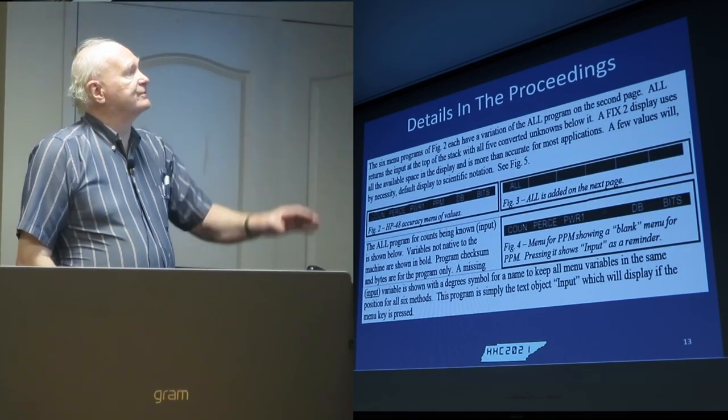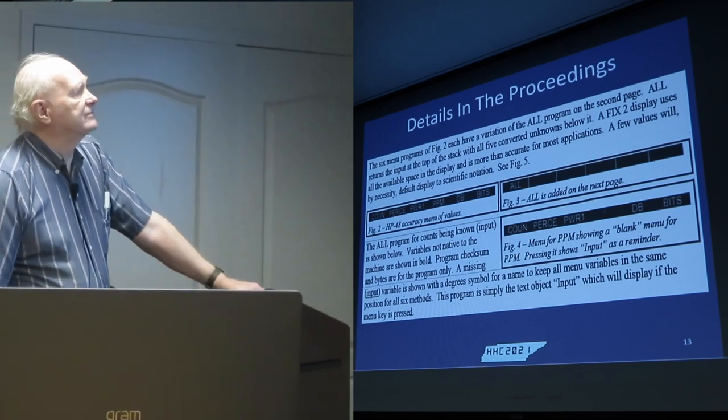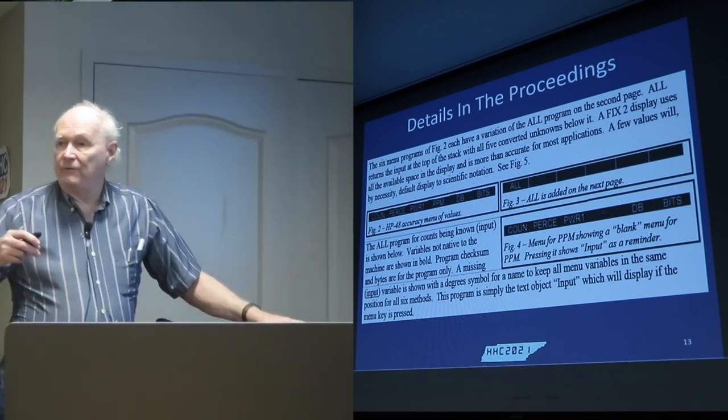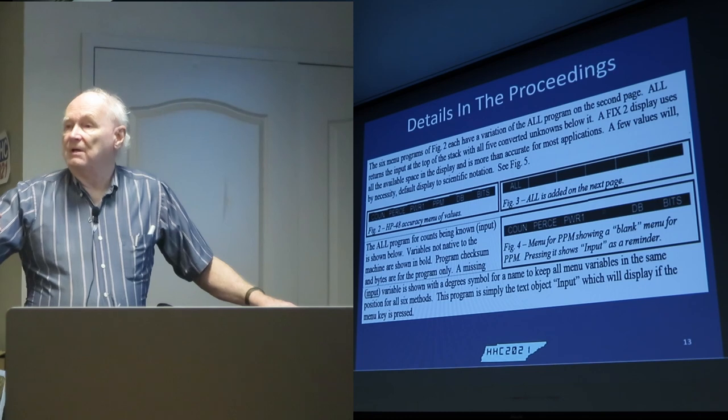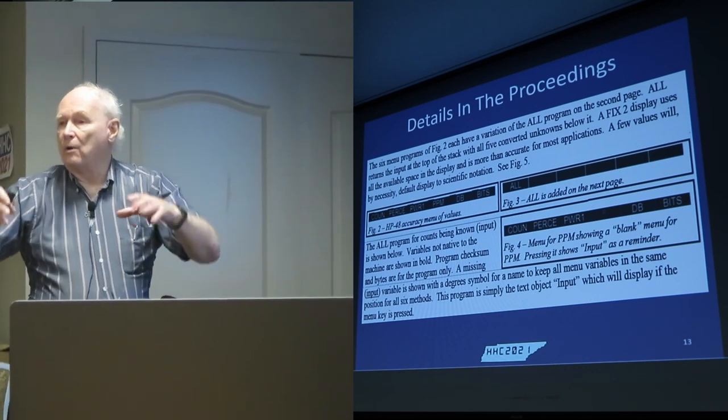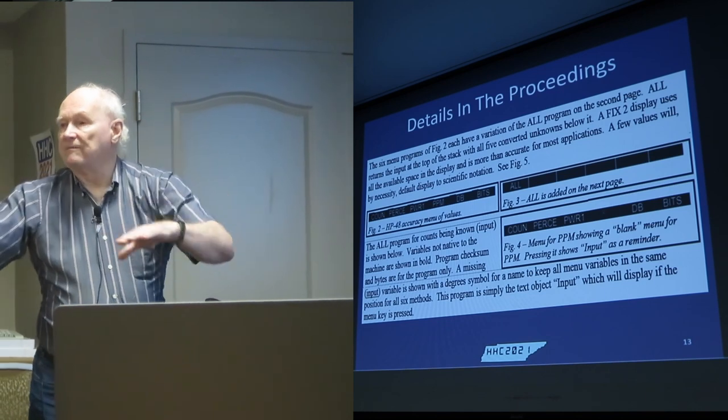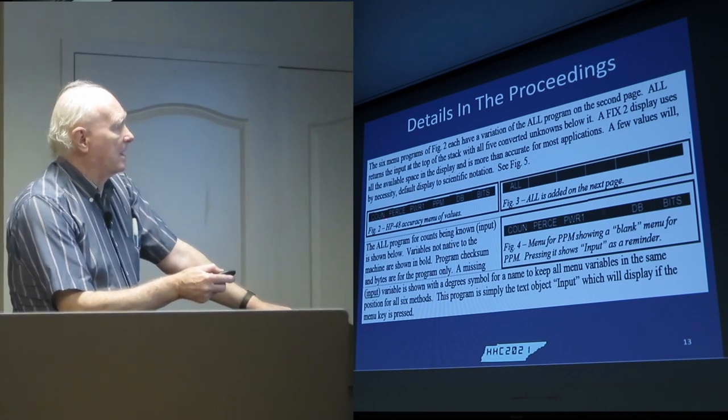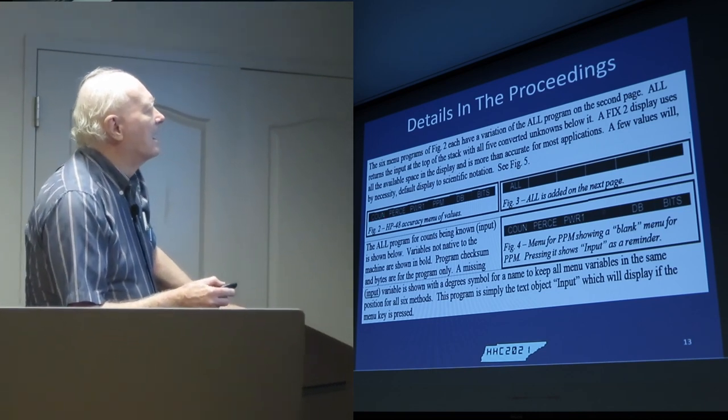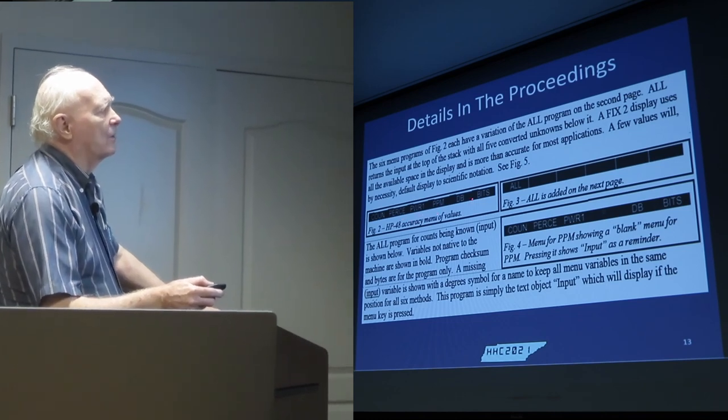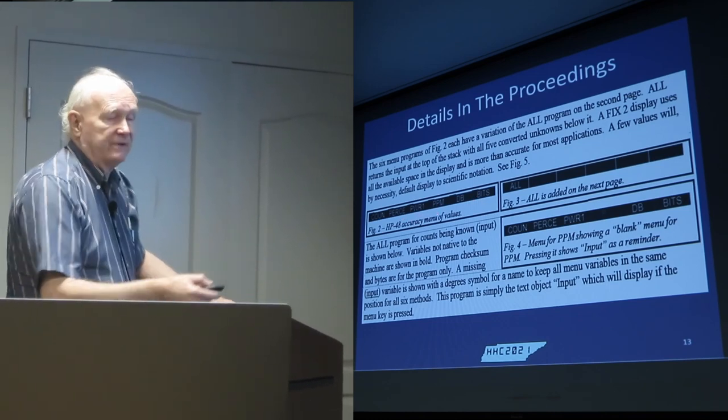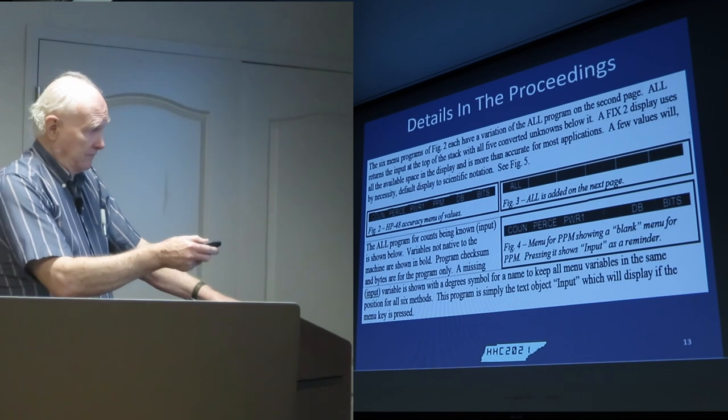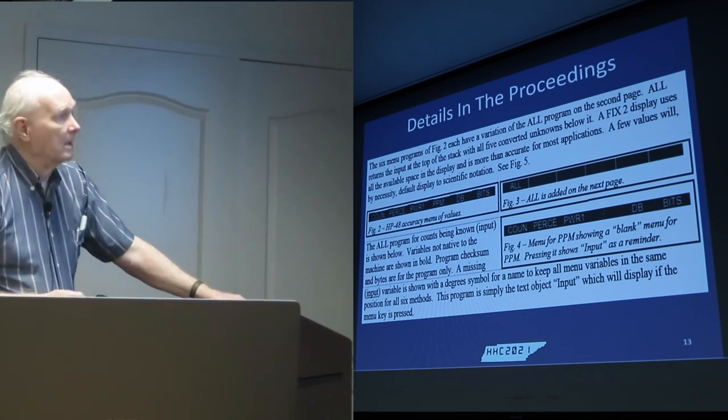So the details are in the proceedings. The six menu programs in Figure 2 each have a variation of the ALL program. In other words, if you know your number of counts and you run the ALL program, it calls all the programs, displays on the stack all the other values. And here's an example of the program itself. Counts, percentage, power, and so forth. And then the ALL, which would be 7th, is on the second screen. All of this stuff is in the proceeding itself.